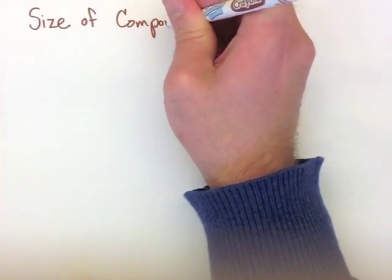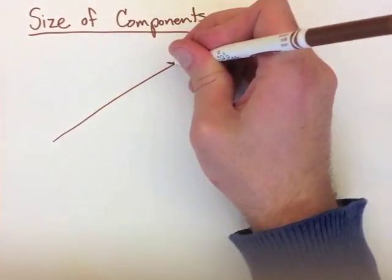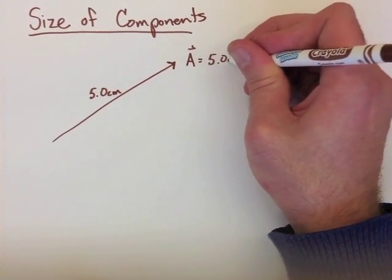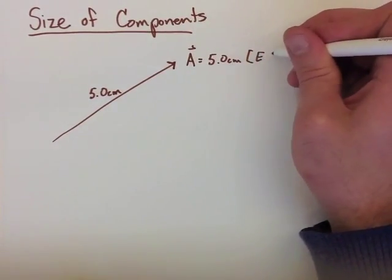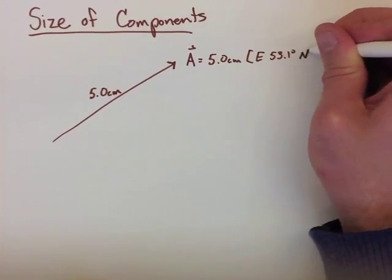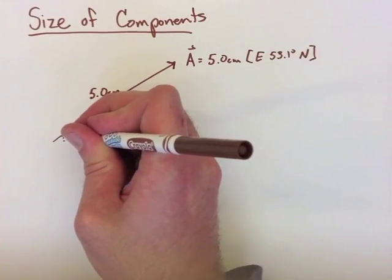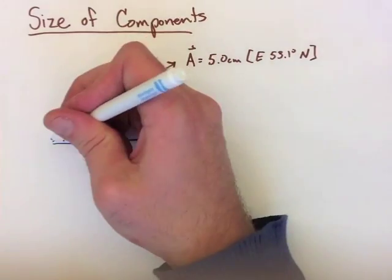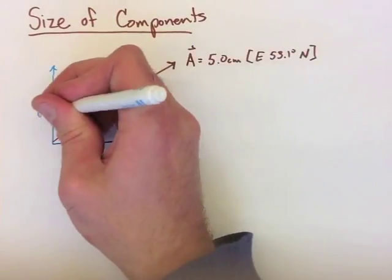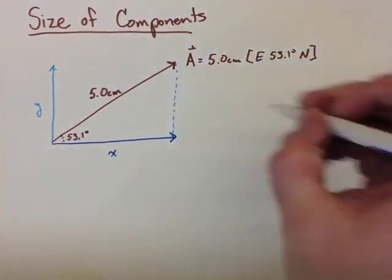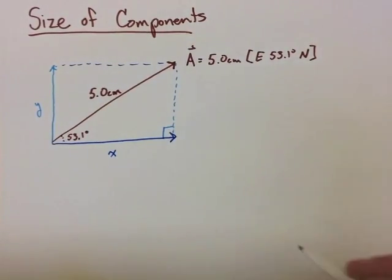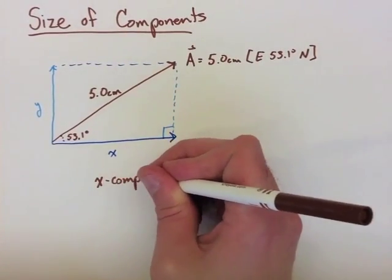Let's now look back at the original vector that we had, 5 centimeters east, 53.1 degrees north, which we'd labeled vector a. We need to now find the size of both of our components for this to have any influence on how we're going to solve equations. So when we break it into our x and our y, we are creating a right-angle triangle when we connect our dotted lines. Now this allows us to use SOHCAHTOA to find out what the actual components of x and y are.